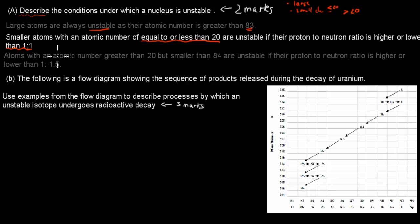And then, atoms with an atomic number greater than 20 but smaller than 84 are unstable if their proton-to-neutron ratio is higher or lower than 1 proton for every 1.5 neutrons.